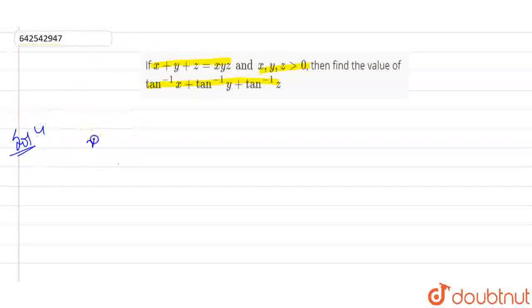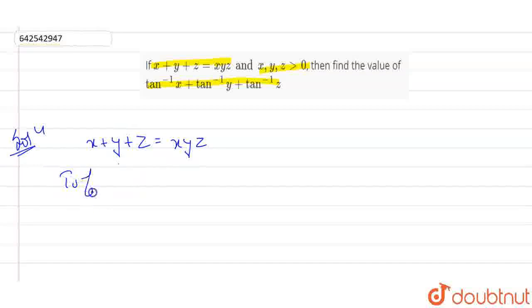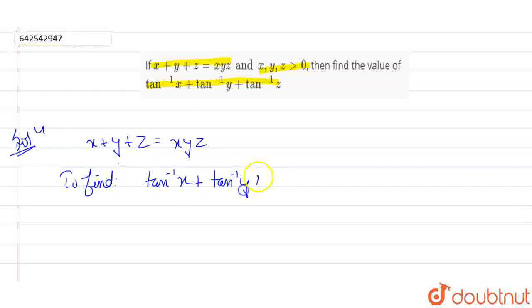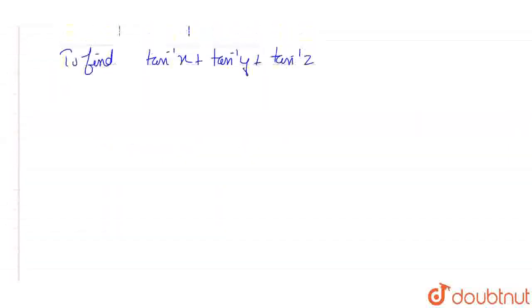It's given to us that x plus y plus z is equal to xyz. And we have to find the value of tan inverse of x plus tan inverse of y plus tan inverse of z. This is what we have to find according to the question.